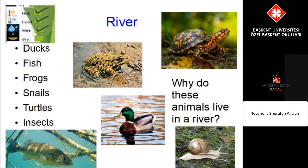Another environment is the river. The river can be hot or cold and it is wet, which means there is lots of water. In the river you can find animals such as ducks, fish, frogs, snails, turtles and insects including bees, butterflies, ants and spiders. You will find all these animals in or near the river.